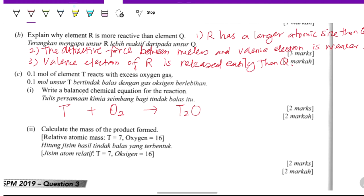Oxygen has 2 here, but here only 1. So we need 2 times 2. If times 2, T becomes 4. So meaning it's 4 here.